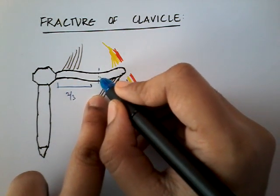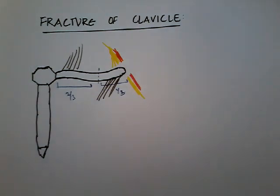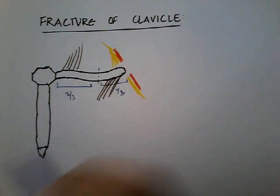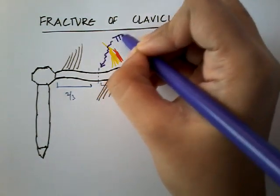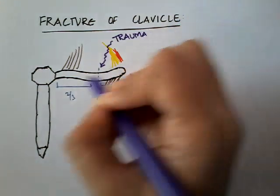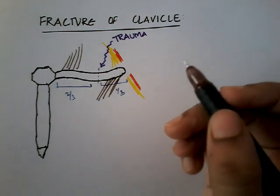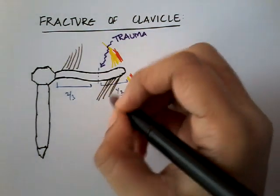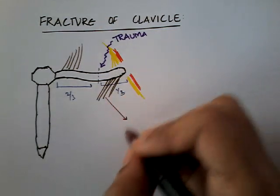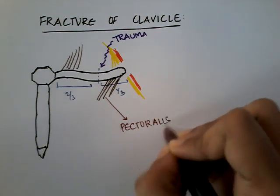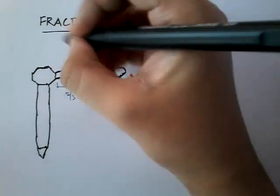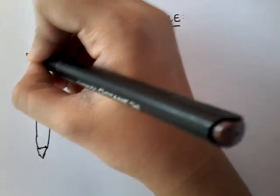This is the most vulnerable point where clavicle fracture can occur. Fracture occurs whenever there is a history of trauma. There are two muscles attached to the clavicle that are really important in clavicle fracture: the lateral one-third part is attached to the pectoralis major, and the medial two-third part is attached above to the sternocleidomastoid.